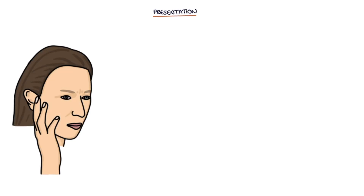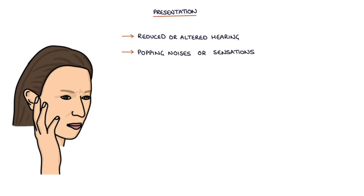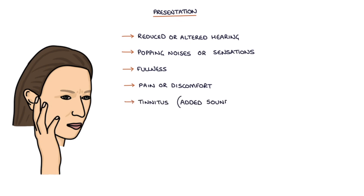Let's talk about the presentation. Eustachian tube dysfunction may present with reduced or altered hearing, popping noises or popping sensations in the ear, a feeling of fullness in the ear, pain or discomfort in the ear, or tinnitus, which is an added sound or ringing heard in the ear.